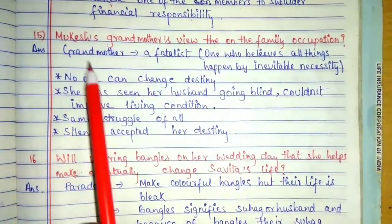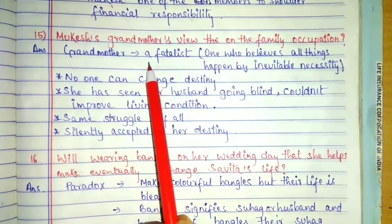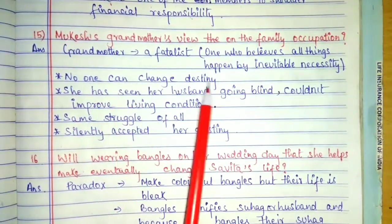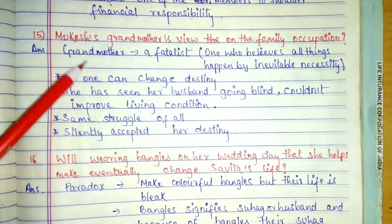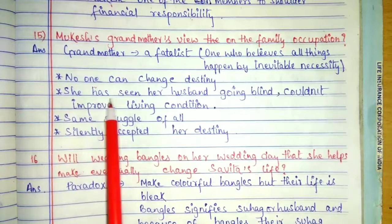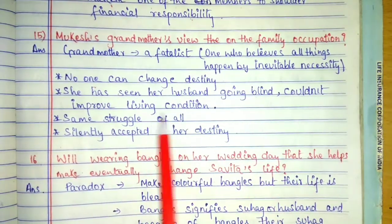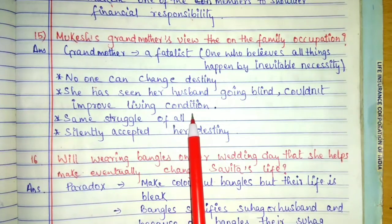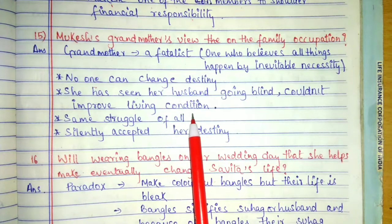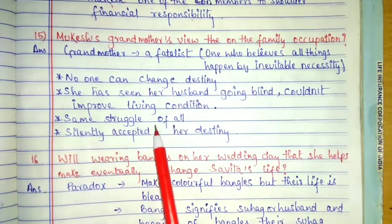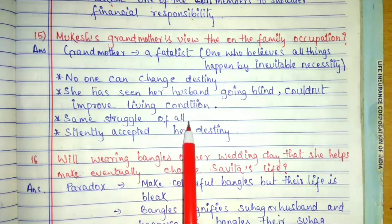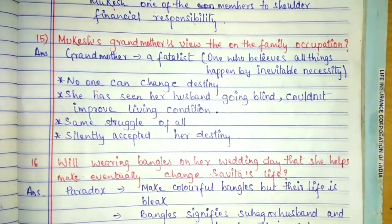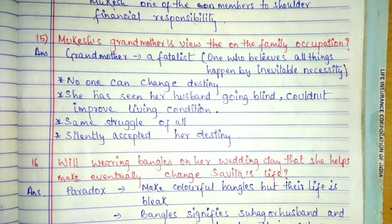Mukesh's grandmother's views on the family occupation: Grandmother is a fatalist. She thinks whatever is happening is happening for a reason and cannot be changed — no one can change destiny. She has seen her husband go blind doing the same work continuously and could not improve their living condition throughout his life. She can see people around her suffering from the same condition, so she silently accepts it as destiny. Had she seen any changes, she would have tried to change her perception, but it did not happen.